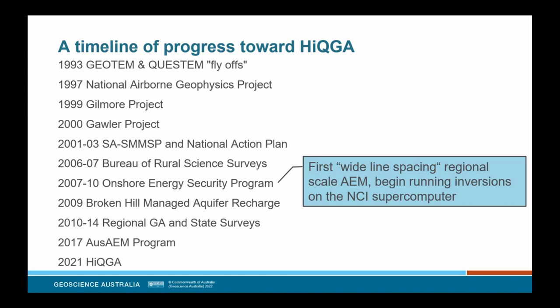Next came the onshore energy security program in 2007-10, which began GA's foray into regional scale AEM mapping at five kilometre wide line spacing. Strong in-house geological synthesis and interpretation of these surveys within our regional geology projects meant regional AEM had a future at GA. By the end of the OSP we had moved our inversion to the national computational infrastructure supercomputer, which allowed us to rerun the inversions for quality control purposes.